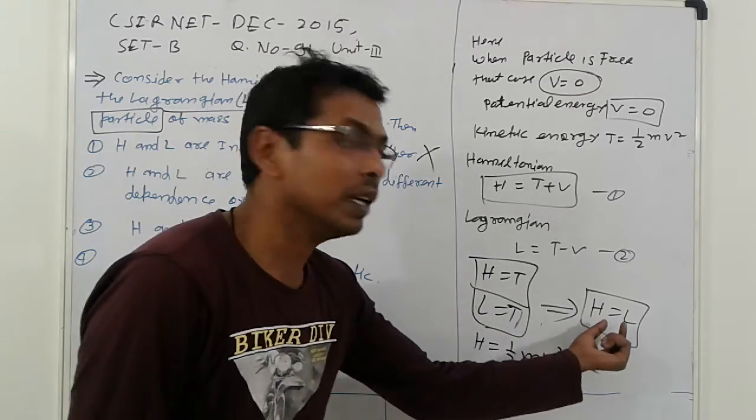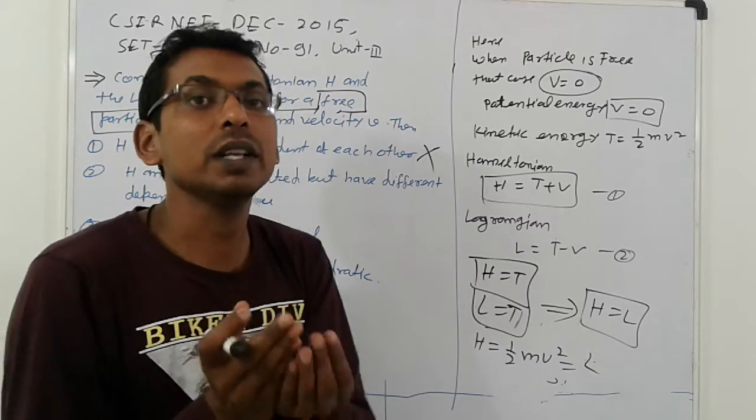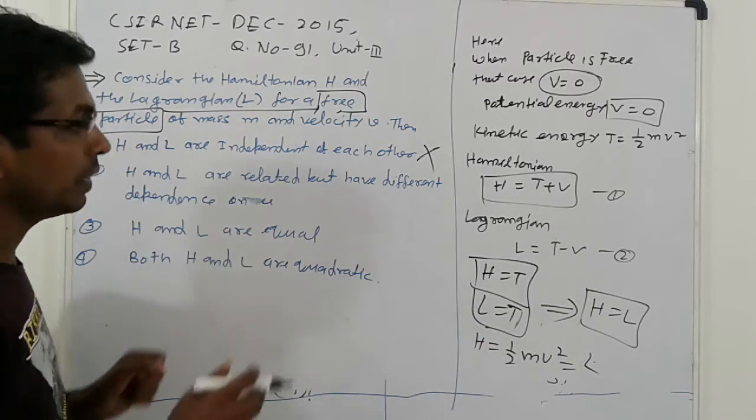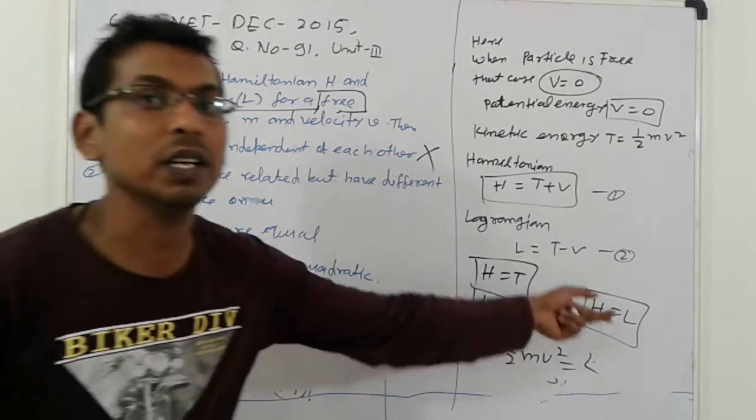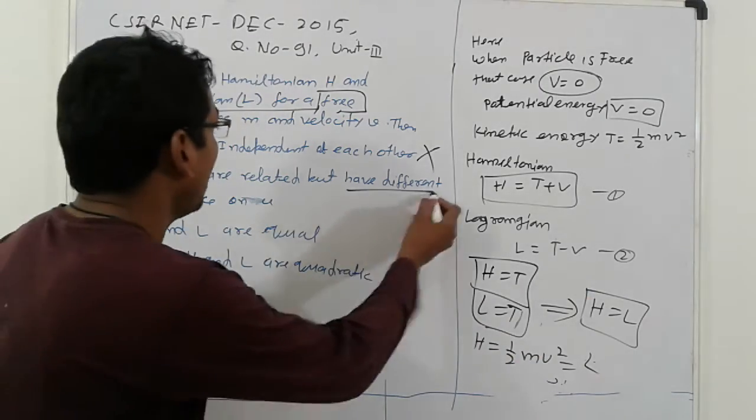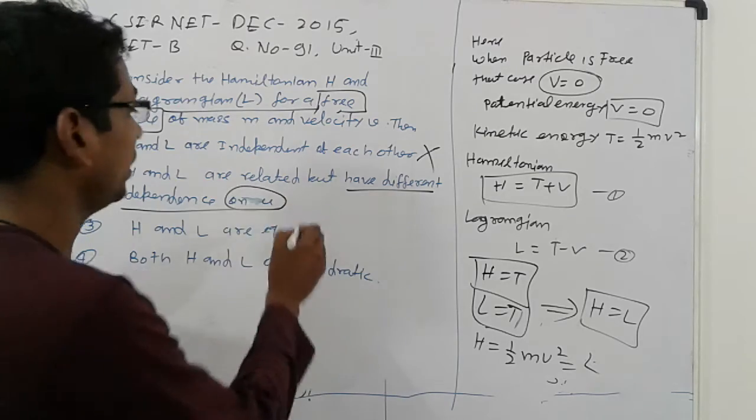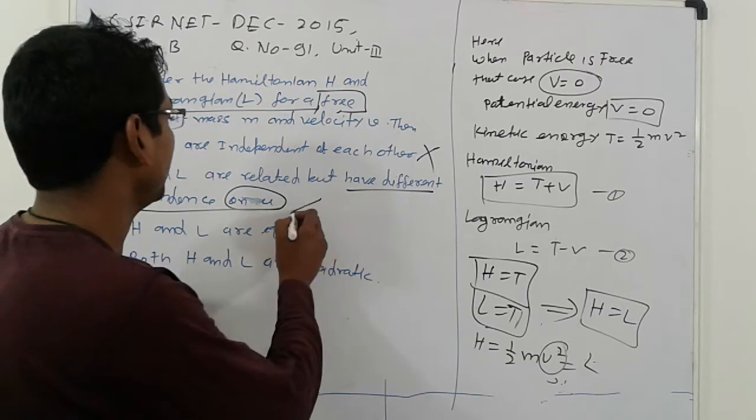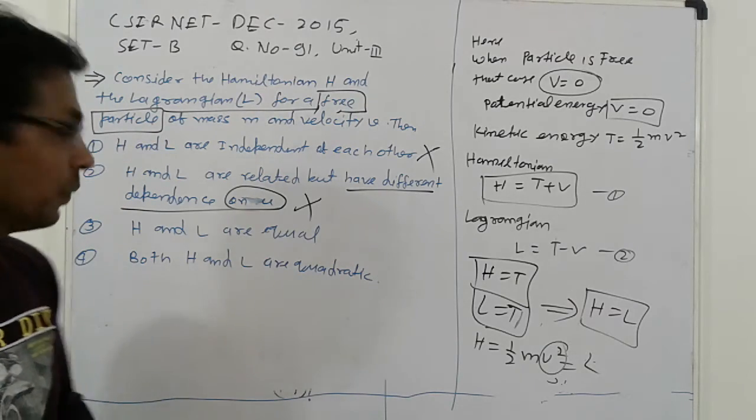Next, H and L are related—related, no problem here, no doubt it is related. But have different dependent of V. What is here common? V is here common. So that second option is also wrong.